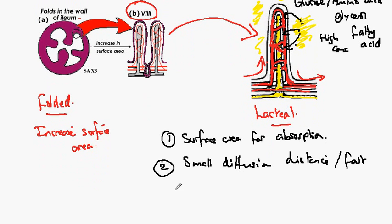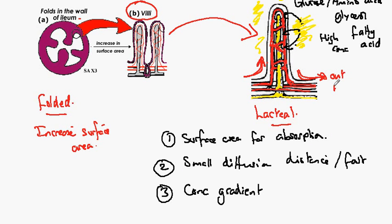The third feature to note is the concentration gradient. Because the blood is flowing in and then out, the blood supply out removes the glycerol, fatty acids, glucose and amino acids which have diffused into the blood. This maintains the concentration gradient by keeping the concentration in the blood low. So this is maintained by blood flow.